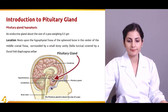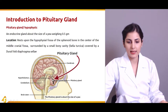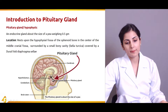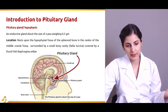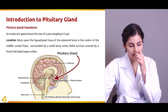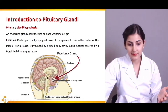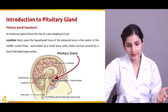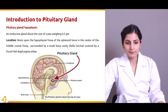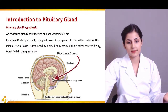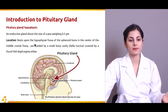In this diagram you can see the pituitary gland and the hypothalamus. The hypothalamus is the control center of the brain; it is located below the thalamus and it ends in the pituitary gland. The pituitary gland rests upon the hypophysial fossa of the sphenoid bone in the center of the middle cranial fossa.